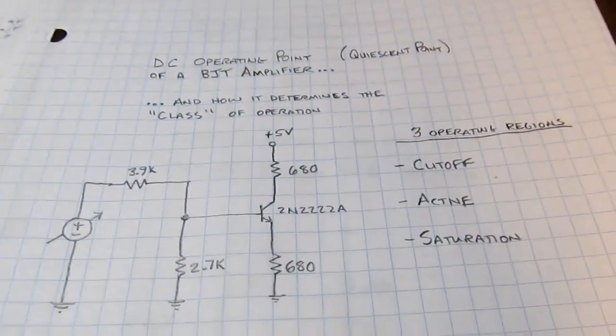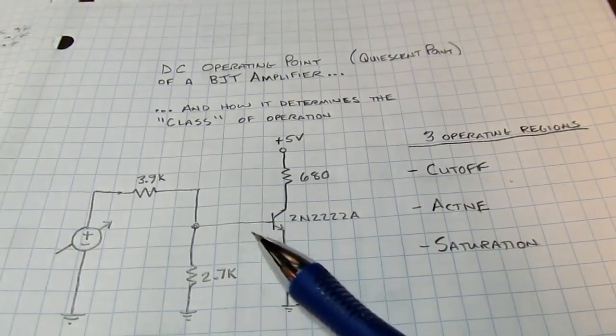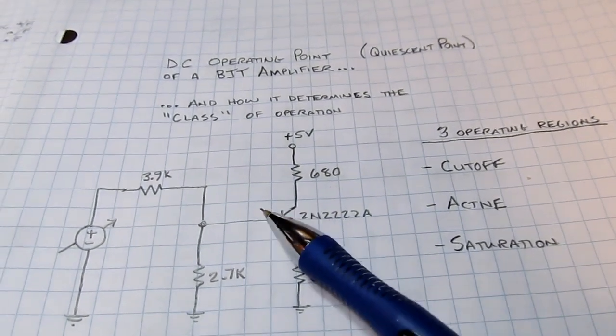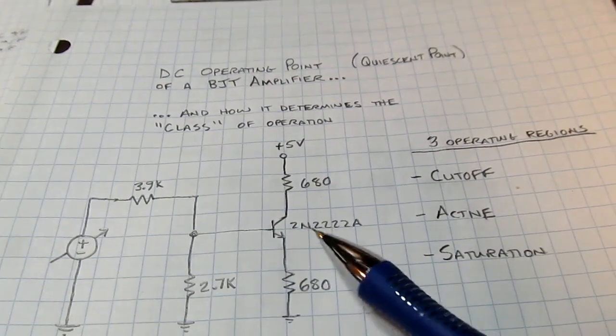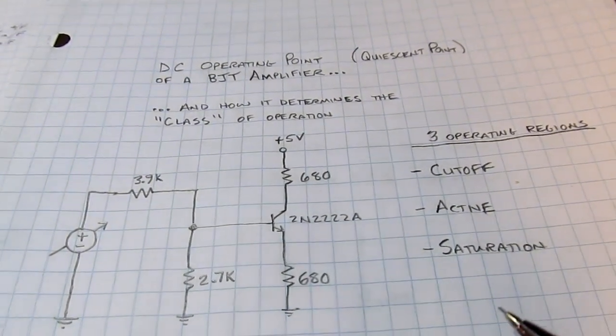The DC operating point is really the bias conditions for the transistor: what the bias voltages are at the three terminals and what currents are flowing through them.